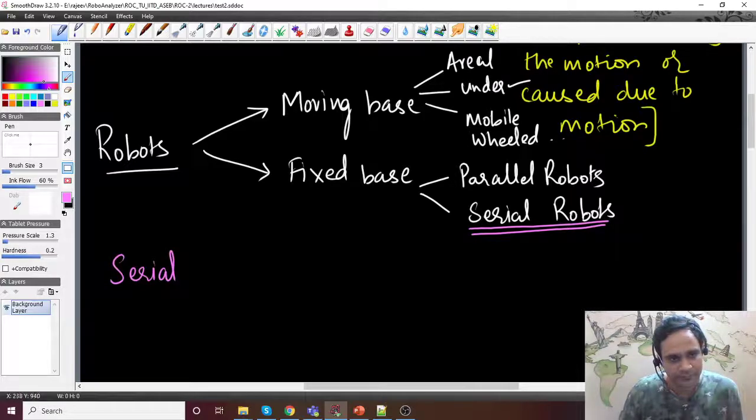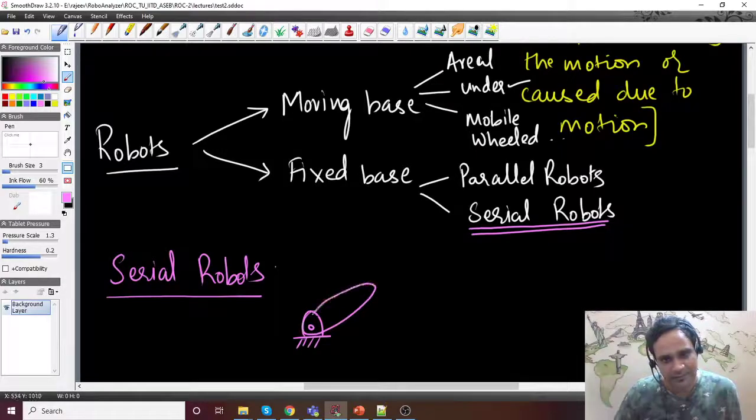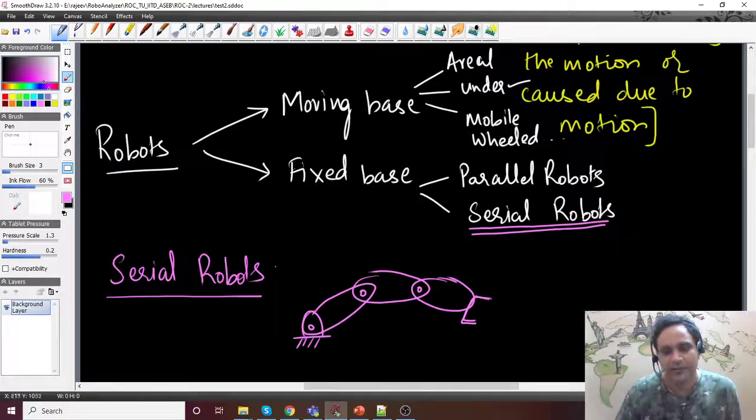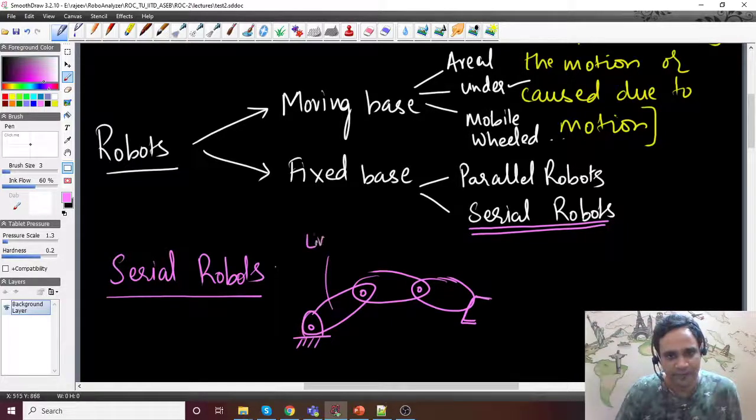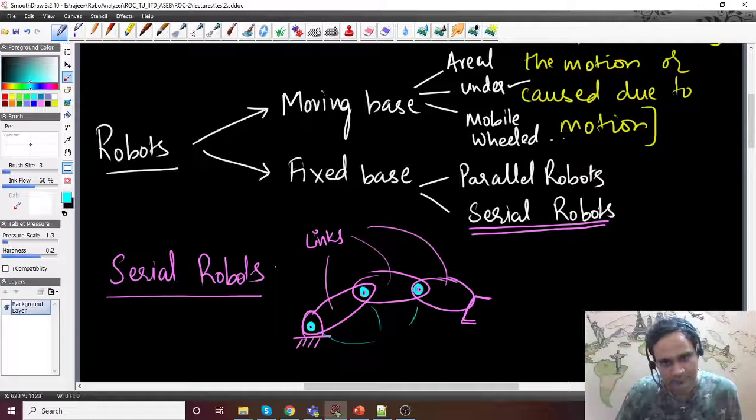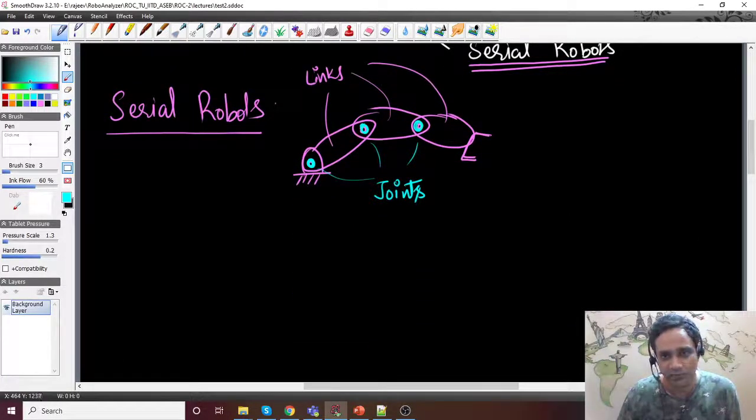Now, the serial robots are basically something which have one fixed link, and then we have a set of links that are connected in series. These are the links we call links, and what we have here are known as joints.